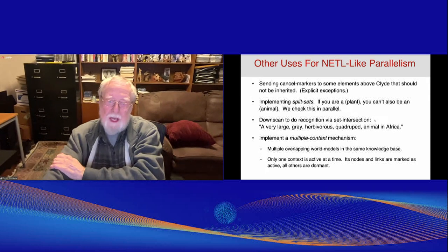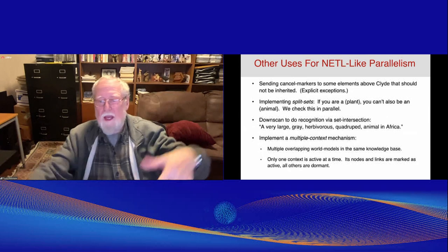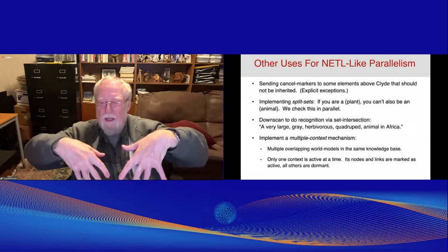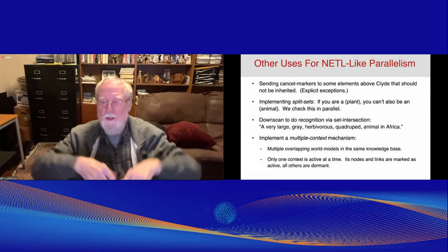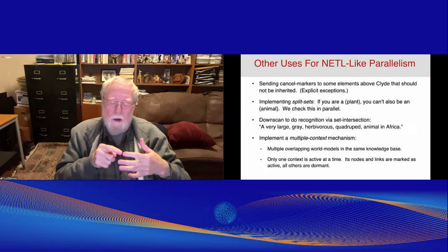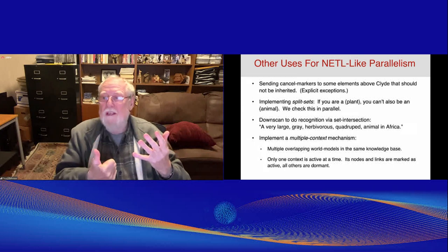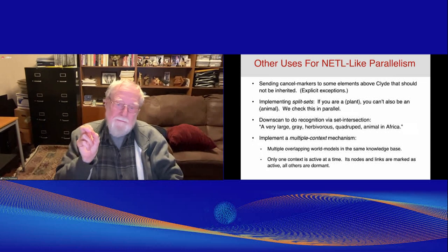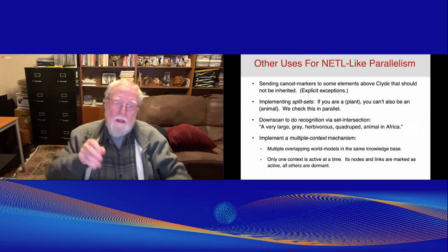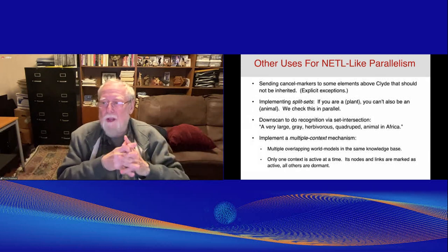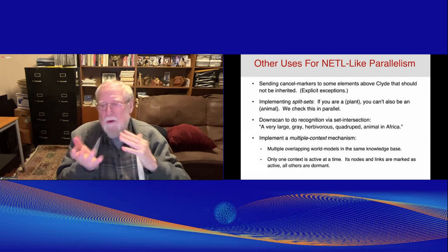Another thing you can do is down scan. You go down the Isa links the other way and you can use this to mark the set of all large things, the set of all large animals, the set of all gray things, the set of all herbivorous animals. And then you can say, okay, all you nodes, if you've got marker one, two, three, four, and five, you're still in the game. You're still a candidate. If there's only one of you, you're the winner. You're the very large gray herbivorous quadruped animal in Africa. So the down scan is a way of doing recognition of a symbolic kind, not the kind that the neural nets do with the numerical features. And we need both kinds of recognition.